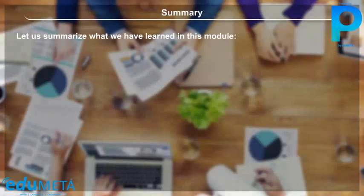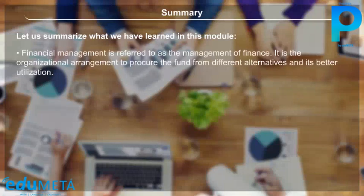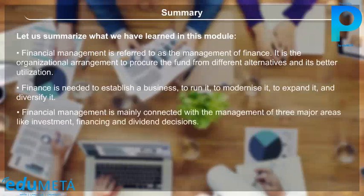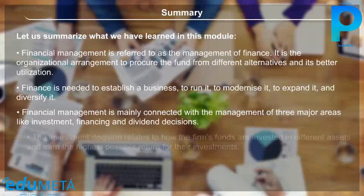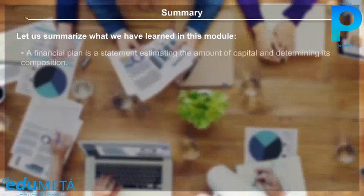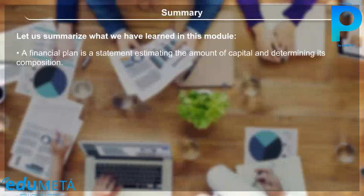Summary: Financial management is the organisational arrangement to procure funds from different alternatives and their better utilisation. Finance is needed to establish, run, modernise, expand, and diversify a business. Financial management is mainly connected with investment, financing, and dividend decisions. The investment decision relates to how funds are invested to earn the highest possible return. Dividend is the portion of profit distributed to shareholders. A financial plan is a statement estimating the amount of capital and determining its composition.